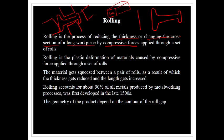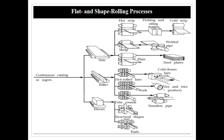Rolling accounts for 90% of all material produced by metalworking, and was first developed in the late 1800s. The geometry of the product is purely dependent on the roller shape. We are going to look at slabs and billets and the length of the rolling operation.